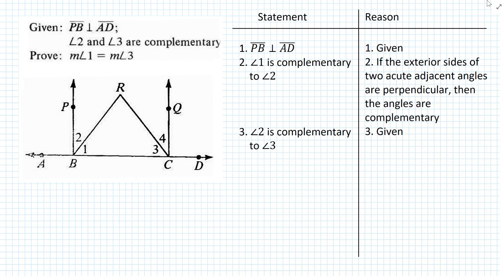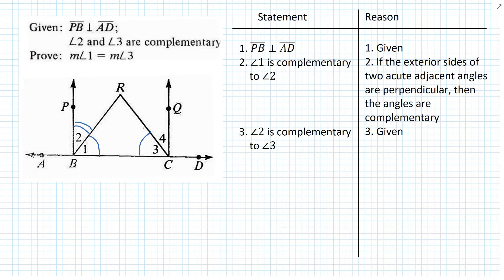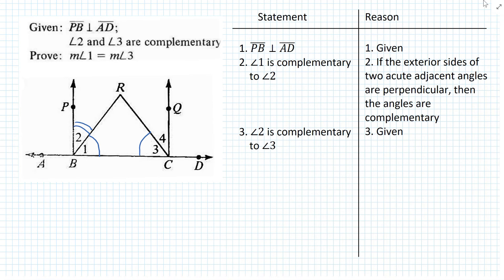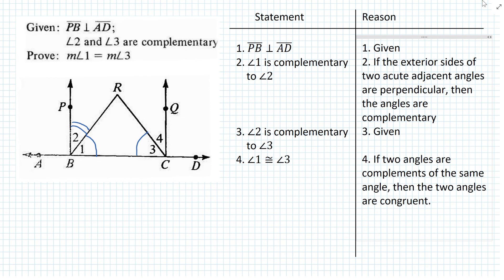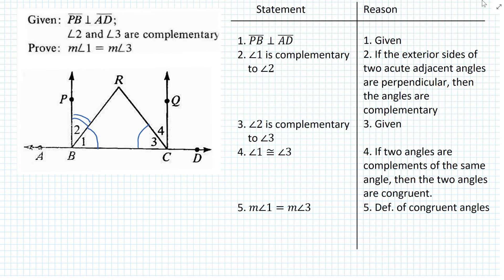So here, angle 1 is complementary to angle 2, and angle 2 is complementary to angle 3. We can deduce that angle 1 and angle 3 are both complements of the same angle, which is angle 2. Therefore, angle 1 and angle 3 must be congruent. For step 4, we write that angle 1 is congruent to angle 3, with the reason: if two angles are complements of the same angle, then the two angles are congruent. Finally, for step 5, we write that the measure of angle 1 is equal to the measure of angle 3, because of the definition of congruent angles.